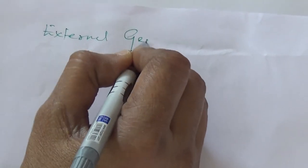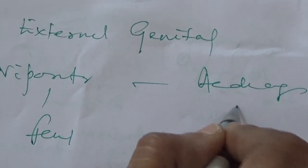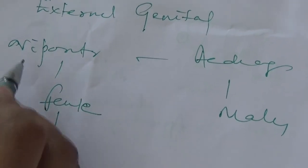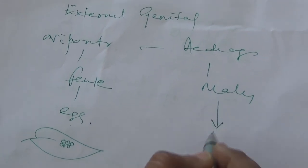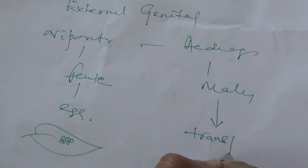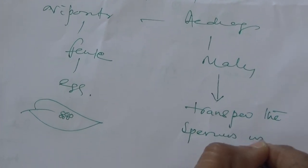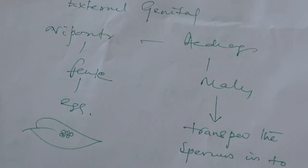Next, we will look at the external genitalia. They are the genital organs — called ovipositor in the case of females, and aedeagus or penis in the case of males. The basic purpose is: females will lay eggs with the help of the ovipositor on any leaf or into the soil. The male genital organ is used to transfer sperms into the female when mating takes place.